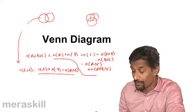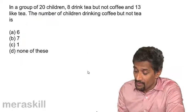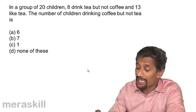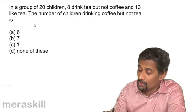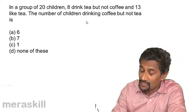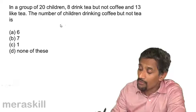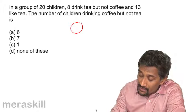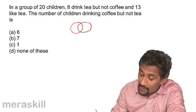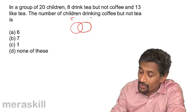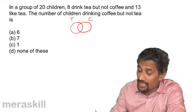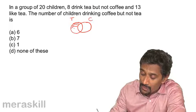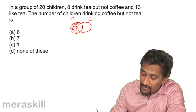Let's take up these examples. In a group of 20 children, 8 drink tea but not coffee, and 13 like tea. The number of children drinking coffee but not tea is what? You have a Venn diagram with tea and coffee. Eight drink tea but not coffee — so this portion is 8, only this much.